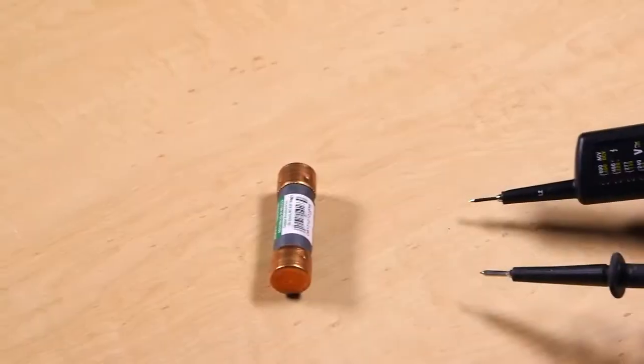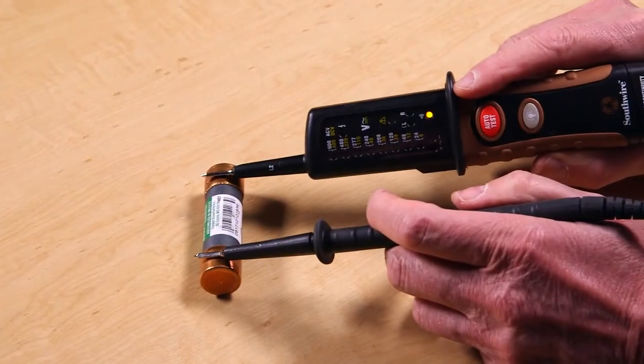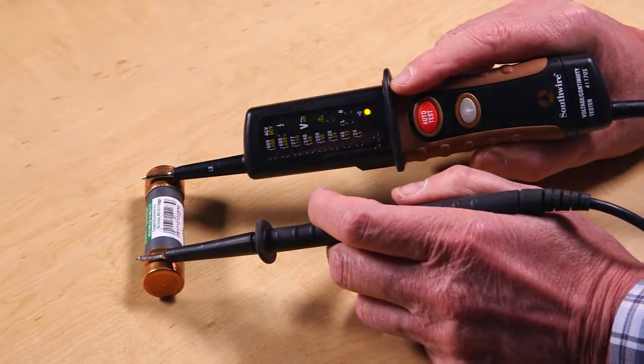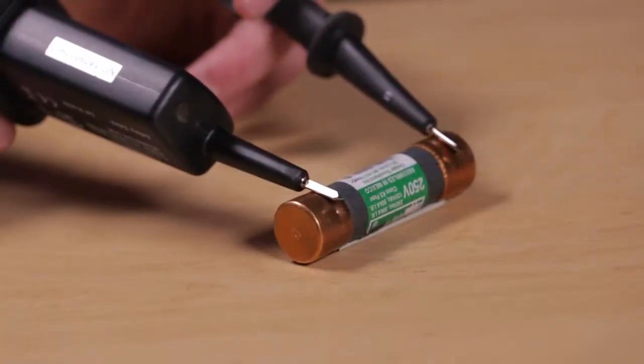The tester checks continuity. Simply touch the probes to the device being tested and the continuity LED and beeper will activate if there is an electrical path.